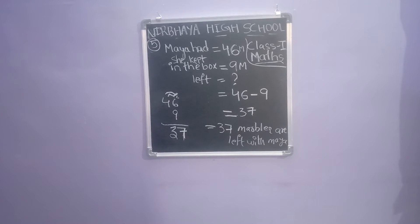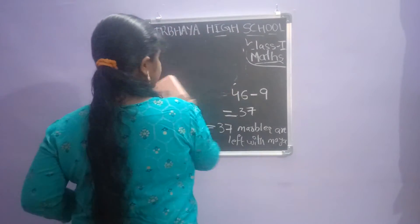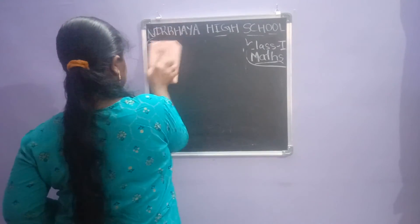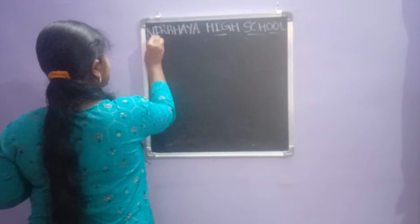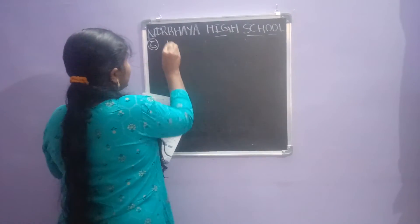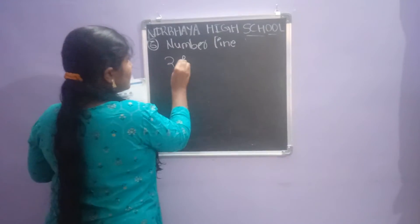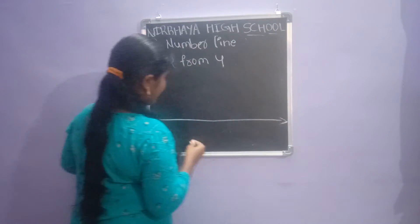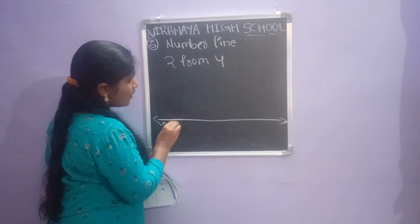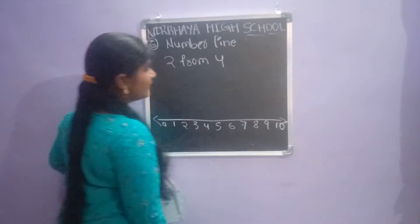Next one — subtract the numbers using the number line method. Number line method — this is the next method. Here we have to subtract the numbers using the number line method. First of all draw the line, then enter numbers starting from 0: 0, 1, 2, 3, 4, 5, 6, 7, 8, 9, 10.